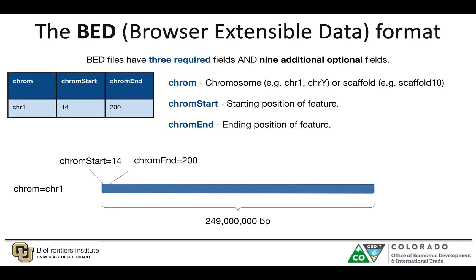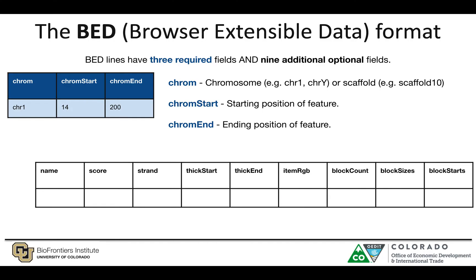Bedtools uses various file formats, but the main file format I want to spend more time on is called the browser extensible data format, or BED file format. The minimum requirement for a BED file is three fields: namely the chromosome name or scaffold name, the start coordinate, and the end coordinate. Additionally, nine other fields can be embedded for each feature.